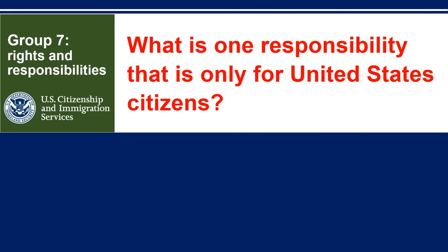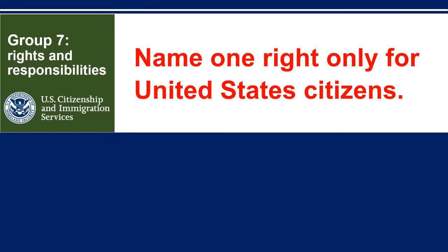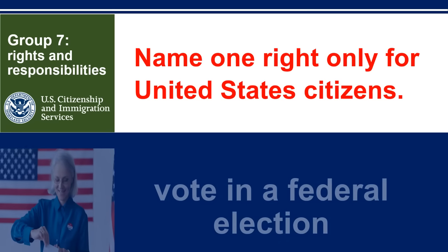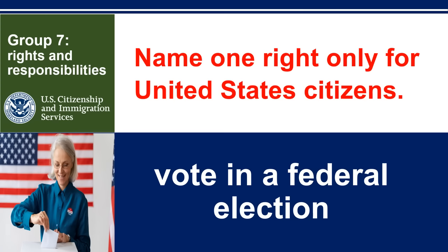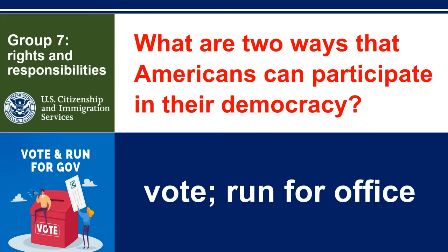What is one responsibility that is only for United States citizens? Vote in a federal election. Name one right only for United States citizens. Vote in a federal election. What are two ways that Americans can participate in their democracy? Vote. Run for office.